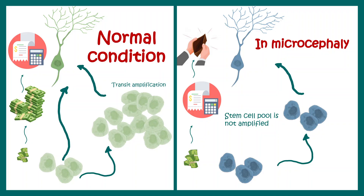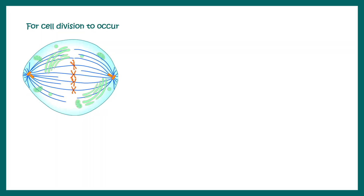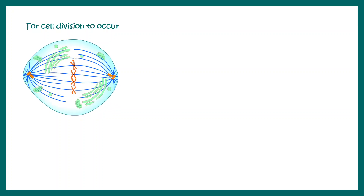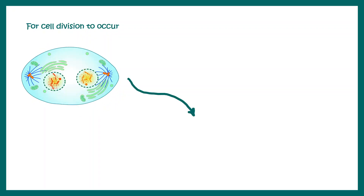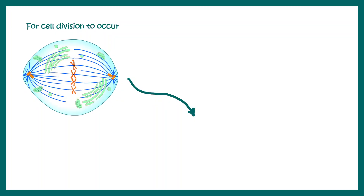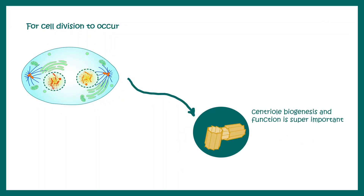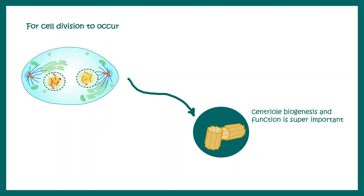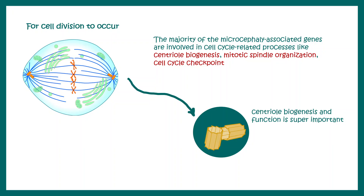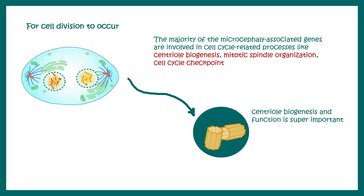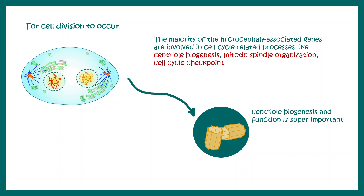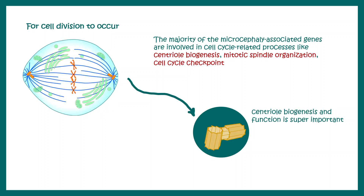In microcephaly patients, we can see a reduction in cortical thickness. For cell division to occur, several molecular and cellular aspects are important. One key aspect is centriole biogenesis and centriole function, which is super important in the context of cell division. Since these stem cells are highly dividing, centriolar regulation is really important. Majority of the microcephaly-associated genes are involved in cell cycle-related processes such as centriole biogenesis, mitotic spindle organization, and cell cycle checkpoint.